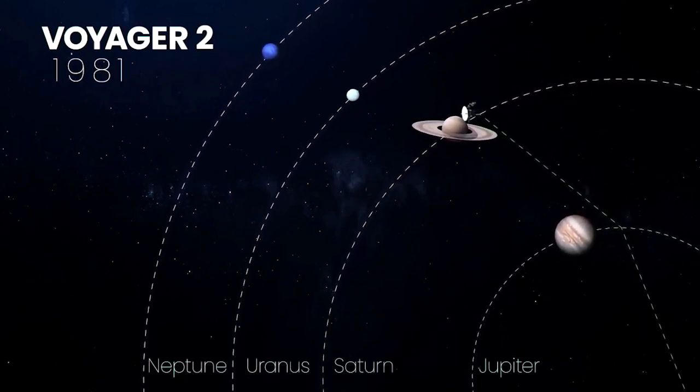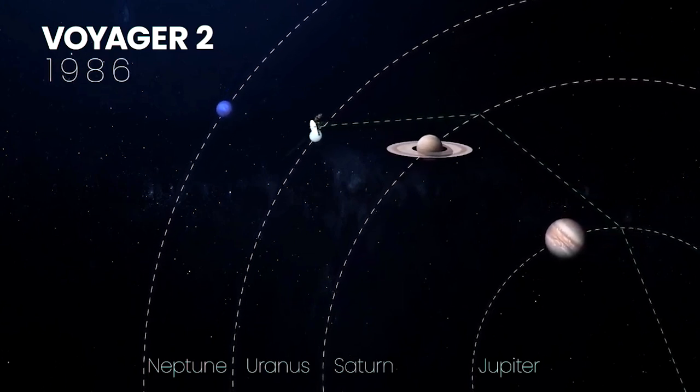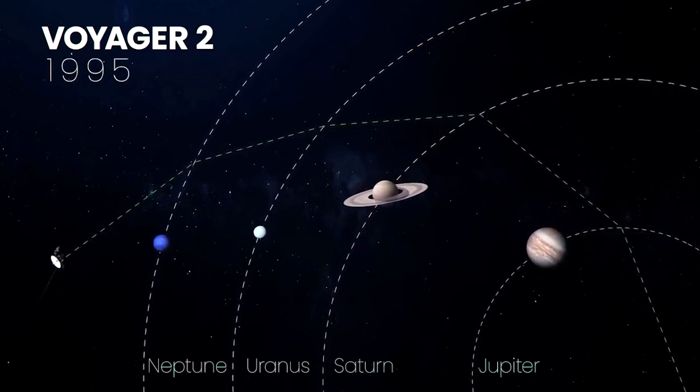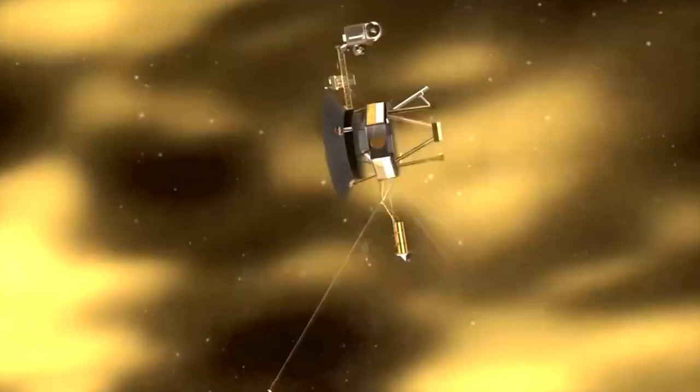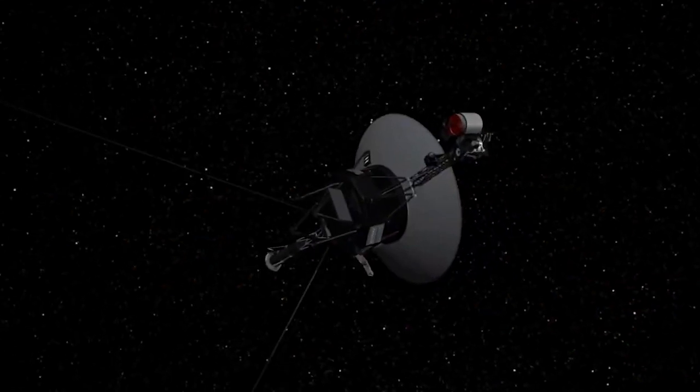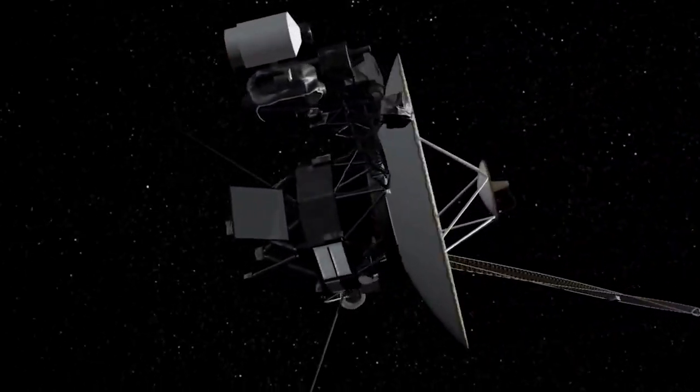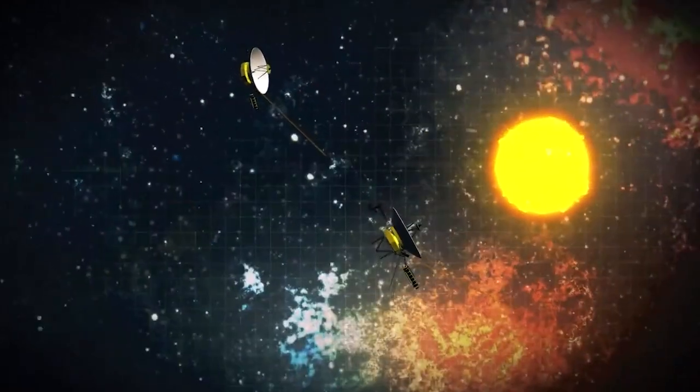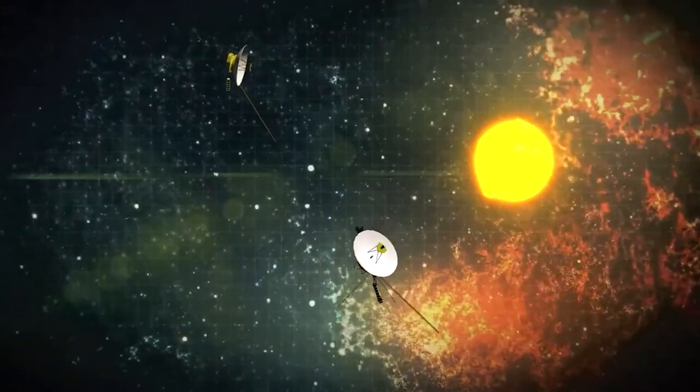Currently, the Voyager space probes are exploring the outer boundary of the heliosphere in interstellar space. As a result of their success, the mission has been extended three times as they continue to transmit useful scientific data. It was confirmed that on August 25, 2012, Voyager 1 had become the first man-made object to exit the solar system and enter interstellar space.